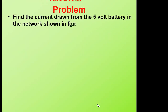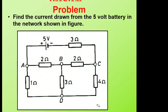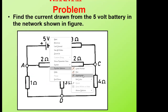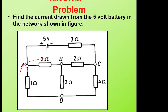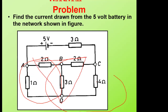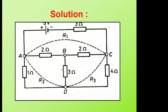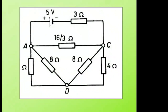In that example, we want to calculate the current drawn from the 5-volt source. Again, the first step is to find a section we can simplify. Looking at the circuit, this is a delta combination, this again is a delta combination, and this is a star combination. I chose to simplify the star first to get R1, R2, and R3. I realized it will simplify — this will go in parallel with that, and this in parallel with that. After simplifying, I get values of 8, 8, and 16/3.